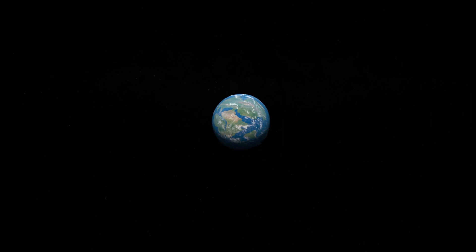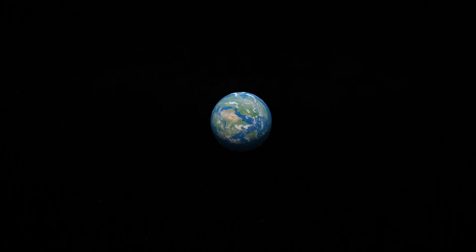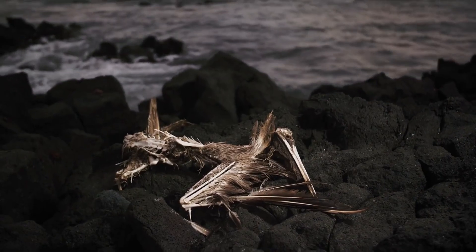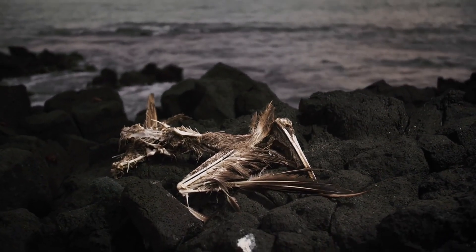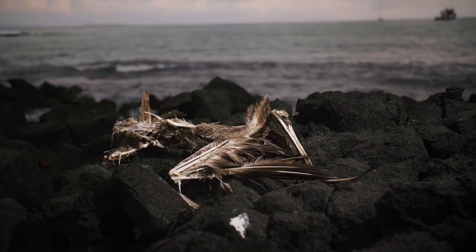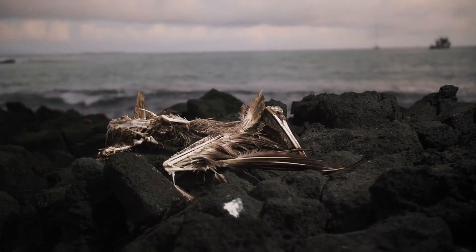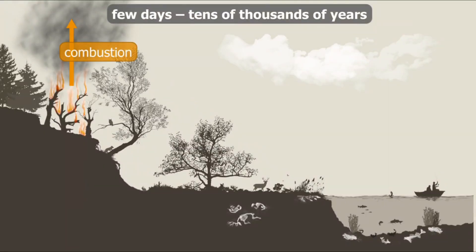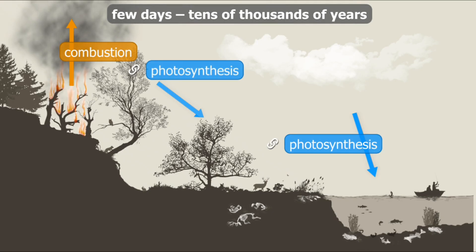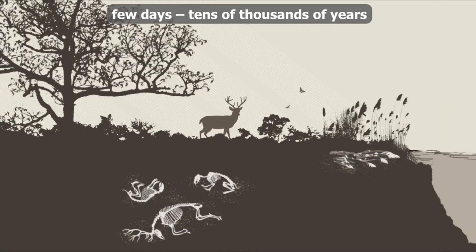Marinoan glaciation, approximately 650 to 635 million years ago. Following a brief interglacial period, another global-scale glaciation occurred. This event, though shorter than the Sturtian, also had profound climatic and biological impacts. Both glaciations were associated with drastic changes in Earth's carbon cycle, oceanic circulation, and atmospheric composition.